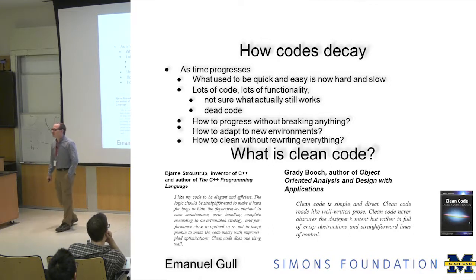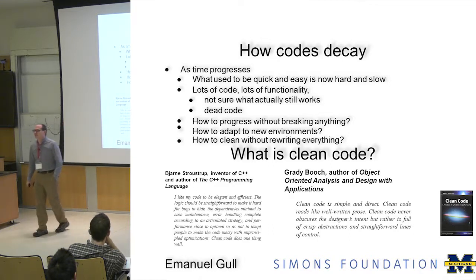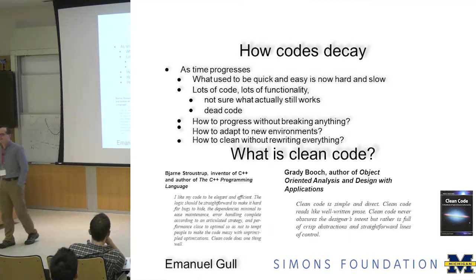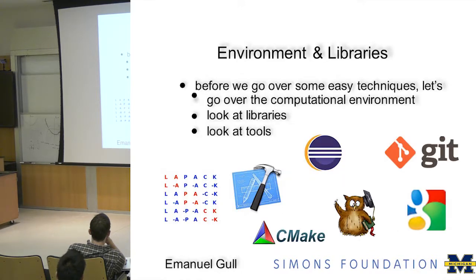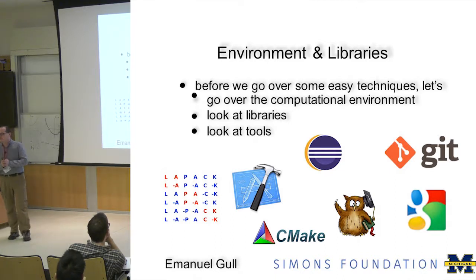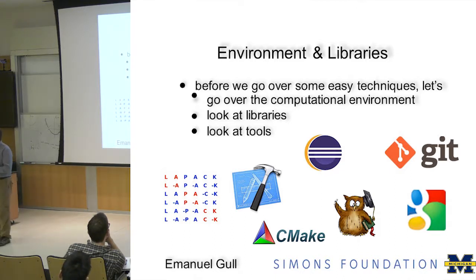Clean code does one thing well. Another expert says clean code is simple and direct — it reads like well-written prose. Clean code never obscures the design's intent, but rather is full of crisp abstractions and straightforward lines of control. Who here has code like that?